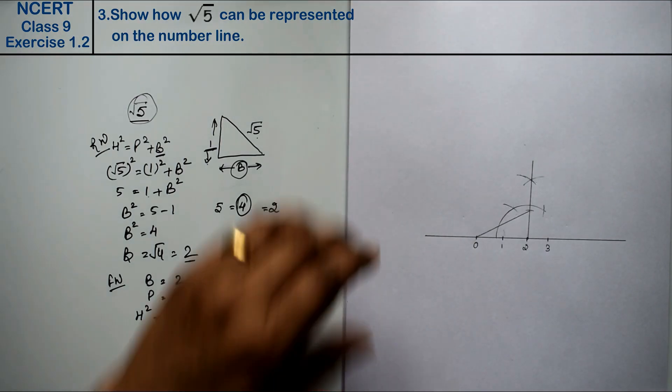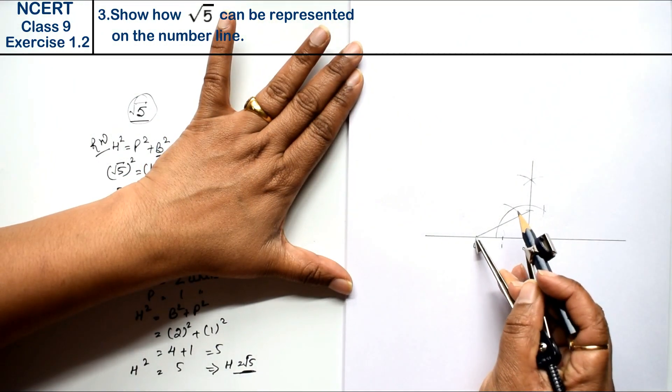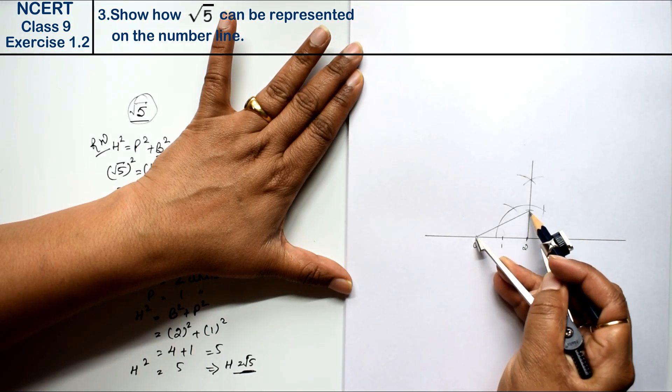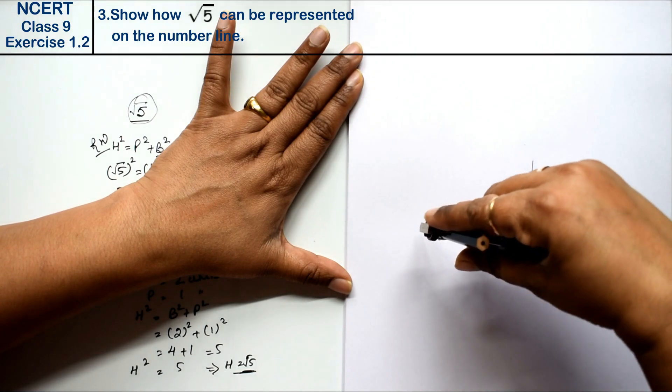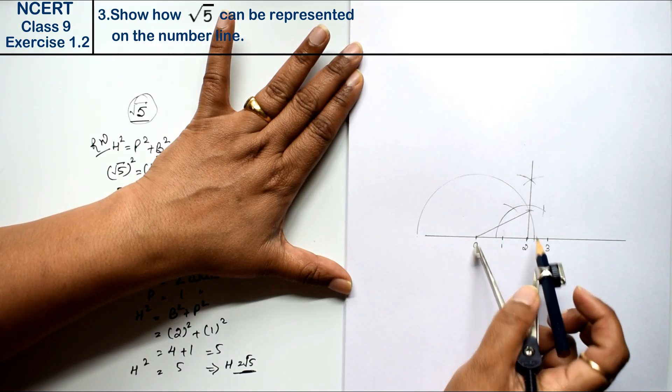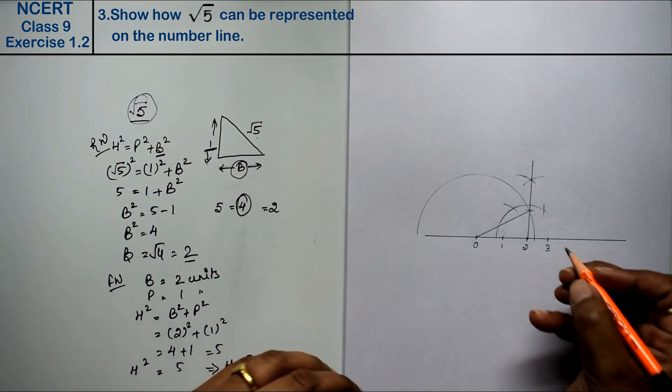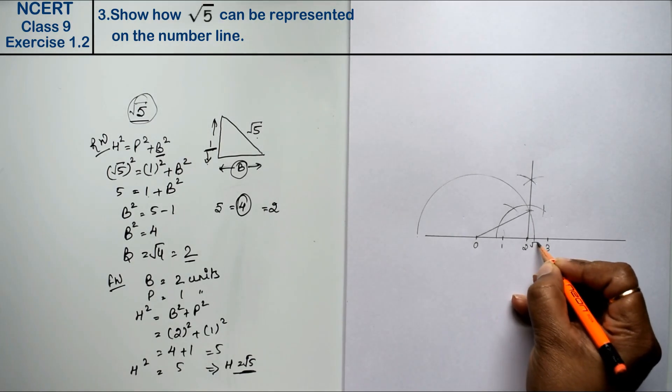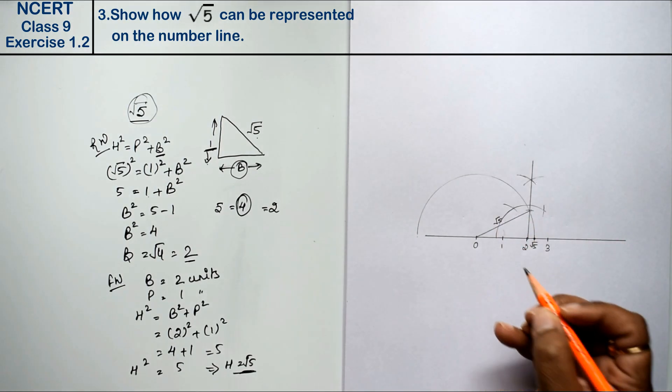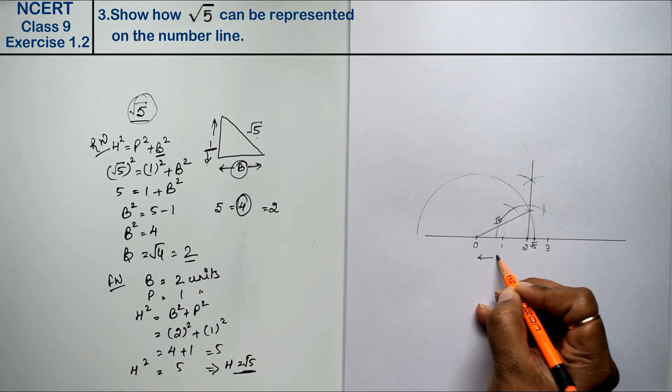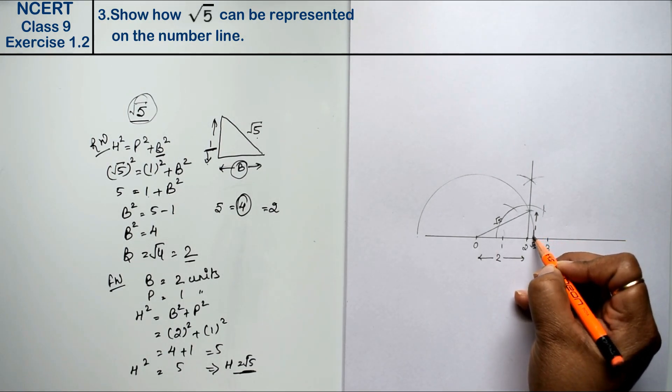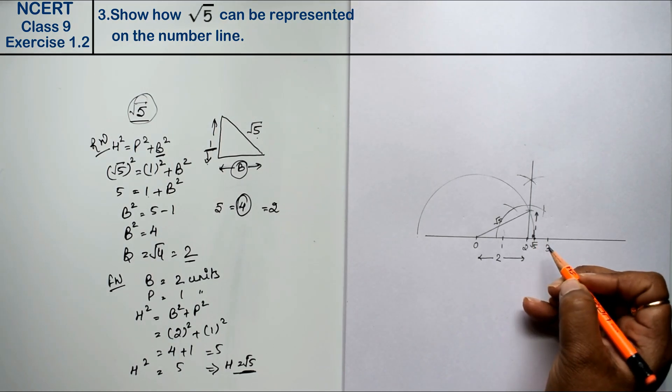Now we have taken one unit from here. We will measure it from here. We will use a semicircle from here. This is our value of root 5. This is our root 5 value. This is our hypotenuse root 5. This is our two units. This is our one unit. This is the value of root 5.